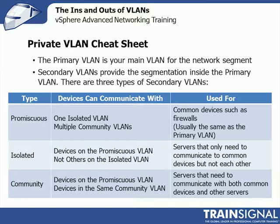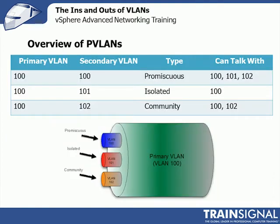Here's a quick cheat sheet. The primary VLAN is your main VLAN for the segment. Secondary VLANs provide the segmentation: promiscuous talks to one isolated VLAN and multiple community VLANs — used for common devices like firewalls. If I put 100 devices in an isolated VLAN they can't talk to each other, so there's no reason to have multiple isolated VLANs. Isolated only talks to devices on the promiscuous VLAN — servers that only need to communicate to the common device. Community devices can talk to the promiscuous VLAN and devices in the same community — good for farms or clusters of systems. A numeric example: primary VLAN 100, promiscuous 100, isolated 101, community 102.